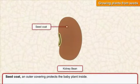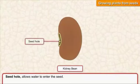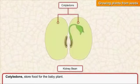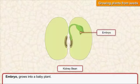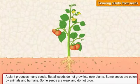The seed coat is an outer covering that protects the baby plant inside. The seed hole allows water to enter the seed. The cotyledons store food for the baby plant. The embryo grows into a baby plant.